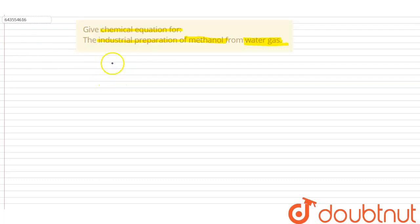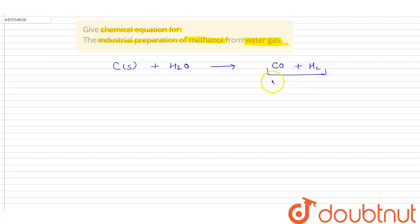When steam is passed over red hot coke — that is solid carbon coke — at a high temperature, it results in the formation of water gas. This is coke, and this is steam.